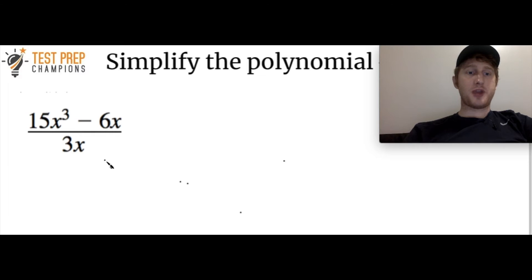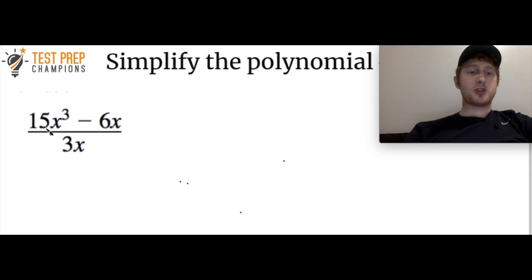Time for example 2. This example is 15x cubed minus 6x divided by 3x. Go ahead and pause the video, try this out, and then we'll go over it. So here, what I want you to see is that each term has the same variable in it, which is an x. So we can actually divide each term by x.